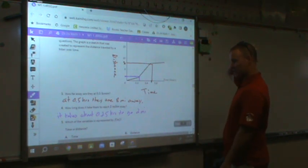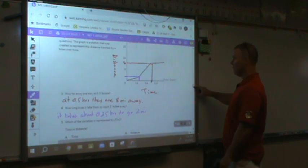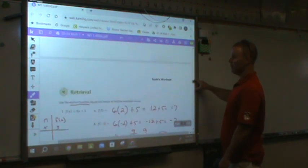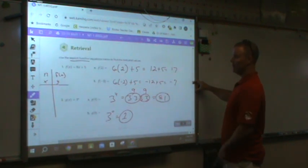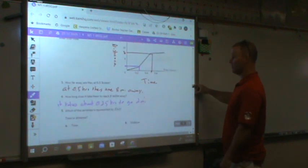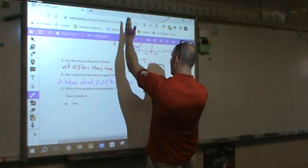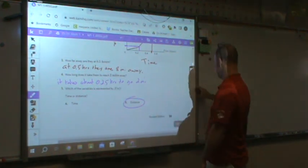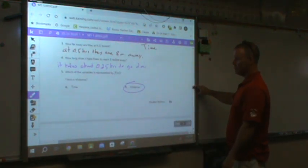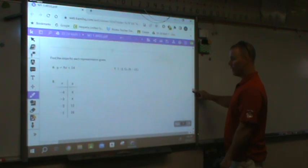Which of the variables is represented by f of n? We kind of talked about that up here, what n and what f of n represent. f of n represents output. Which one is output? X, y should be distance. Again, pretty simple. Pause and rewind if you need to.